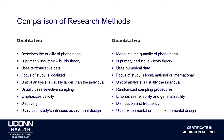Qualitative research uses selective sampling, as opposed to the randomized sampling process of quantitative work. It emphasizes validity, whereas quantitative emphasizes reliability and generalizability. It's an important step in the discovery process as opposed to measuring distribution, frequency, and maybe even hypothesis testing. And it uses the case study continuous assessment design as opposed to the experimental or quasi-experimental design.